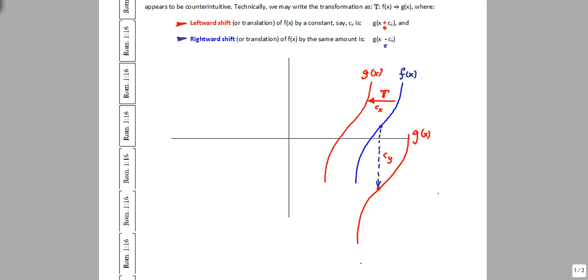This distance here, we might call it c sub y, the subscript y meaning that it is a vertical shift. And this one is in fact very intuitive because g of x, in this particular case, is intuitively f of x less that c sub y value. So for vertical shift, this is intuitive. But as we explained earlier, the horizontal one is a little bit problematic.